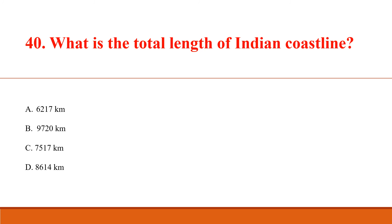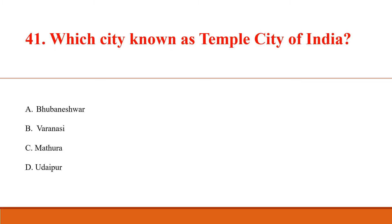What is the total length of the Indian coastline? Answer C: 7,517 km (exact length is 7,516.6 km). Which city is known as the temple city of India? Answer A: Bhubaneswar. Bhubaneswar is the capital of Odisha state.